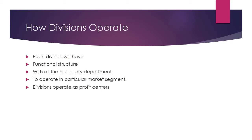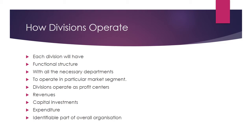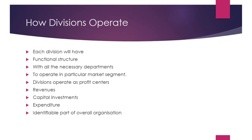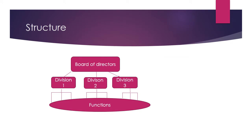The divisions operate as profit centers, meaning each division will have its own revenues, capital investments, and expenditure, and will be an identifiable part of the overall organization. The divisional structure will have a board of directors, and under the board of directors there will be divisions — division 1, division 2, division 3 — and every division will have its own functions.